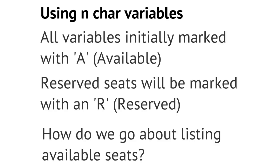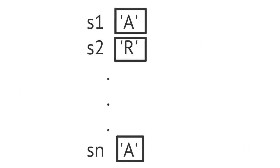We'd have to think about the operations — how do we list available seats? That could be quite troublesome with just a bunch of declared variables. We'd have S1, S2, all the way through Sn as names for our character variables, each with a value of 'A' or 'R'. To list all available seats, we'd have to write a test on every single variable, checking whether S1 equals 'A', whether S2 equals 'A', and so on — very tedious with this structure.